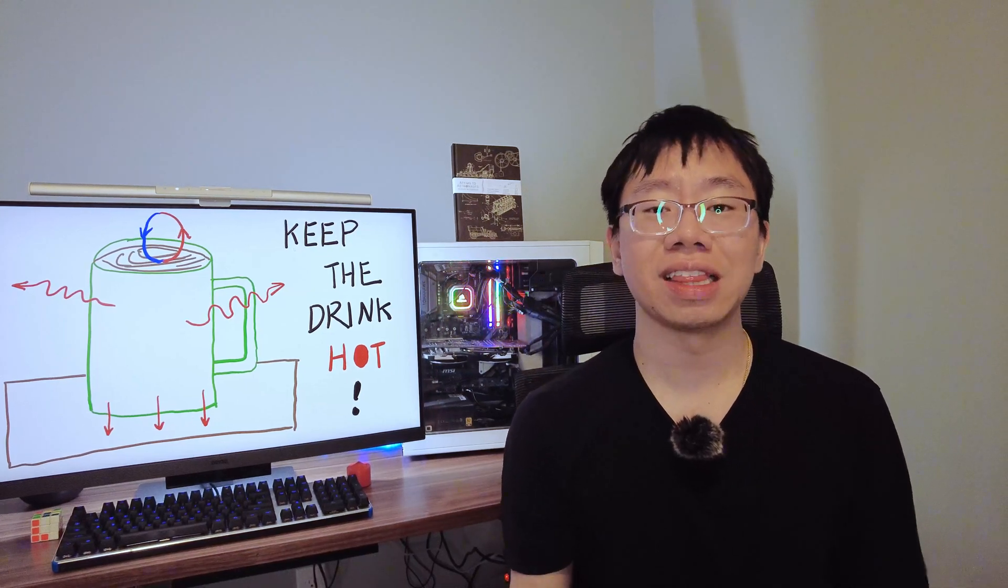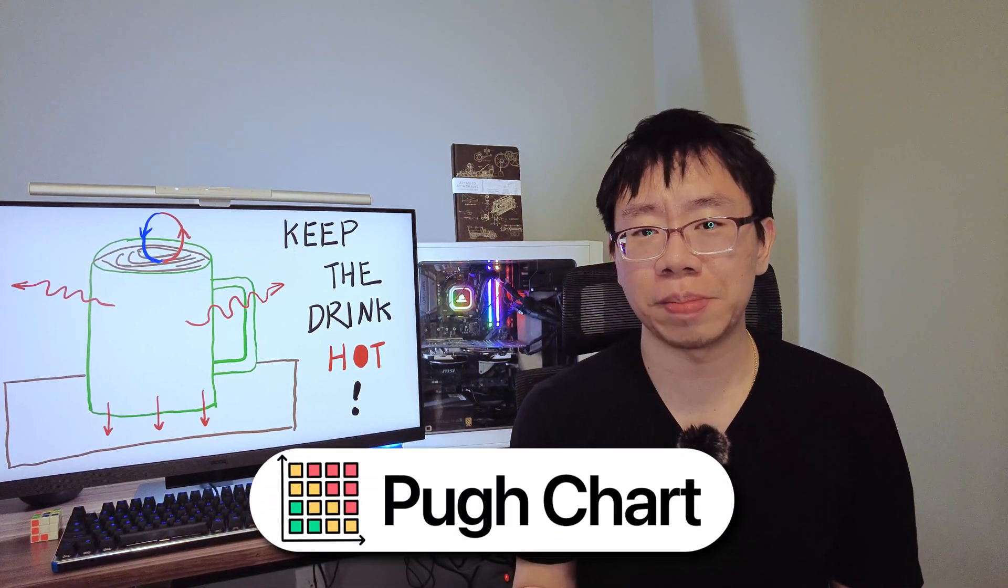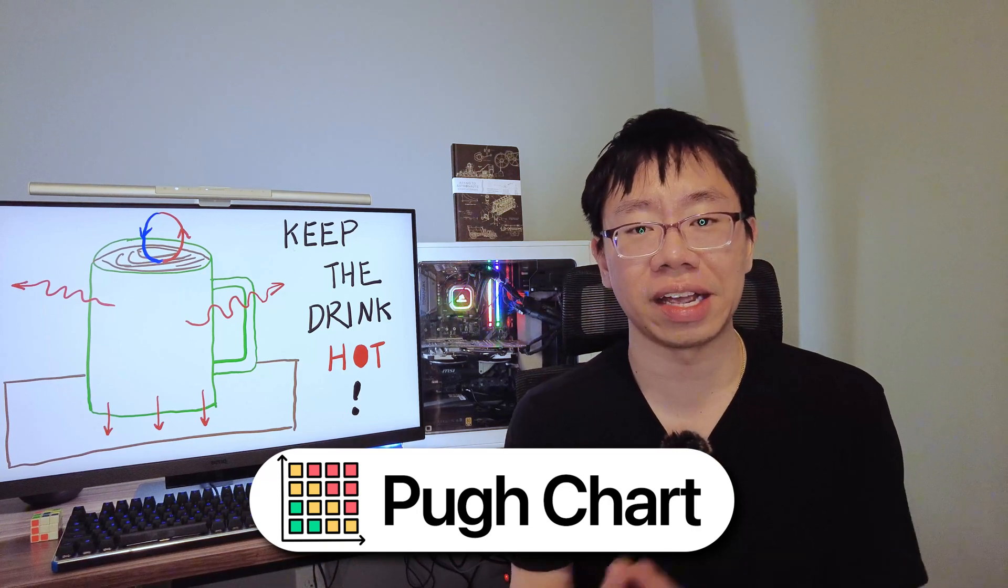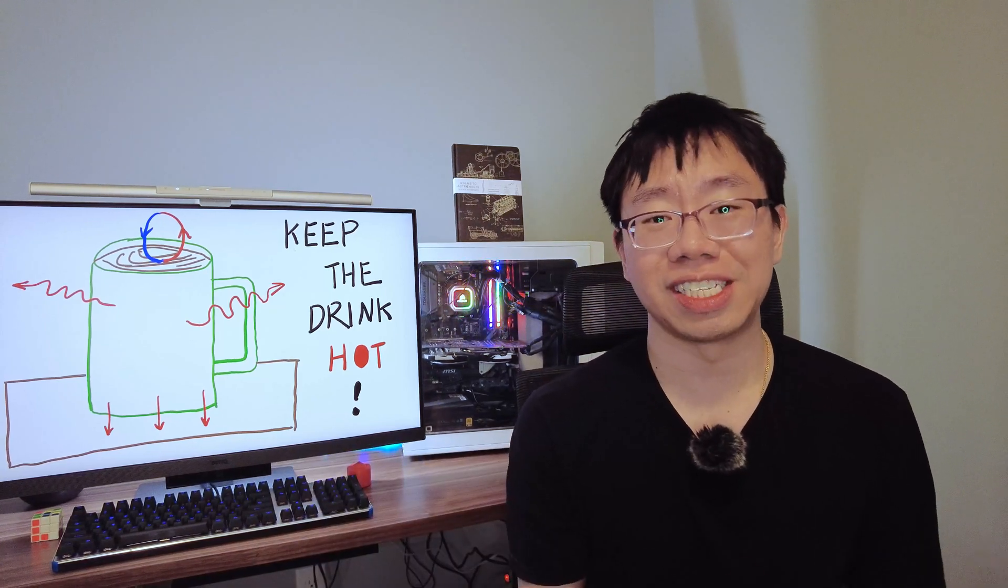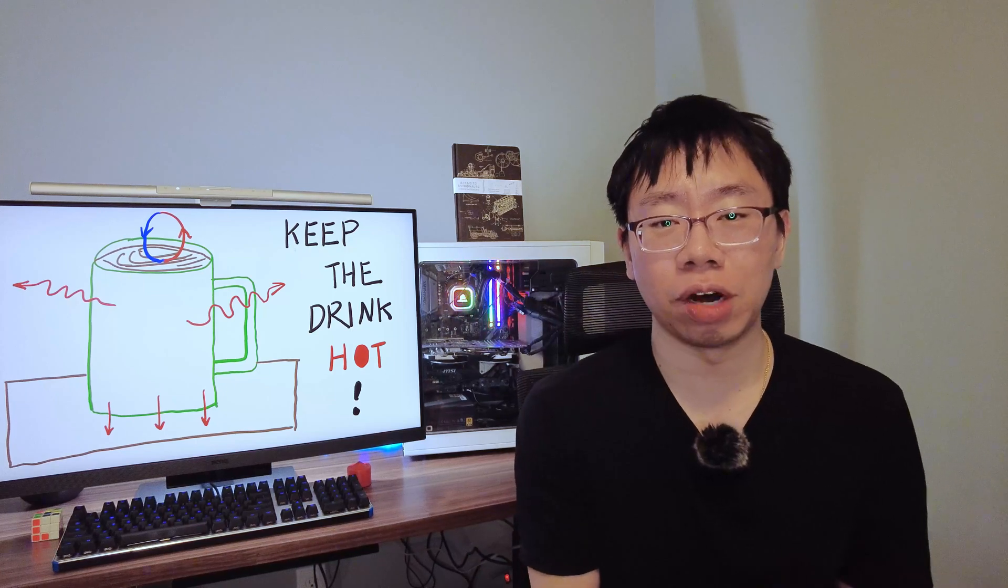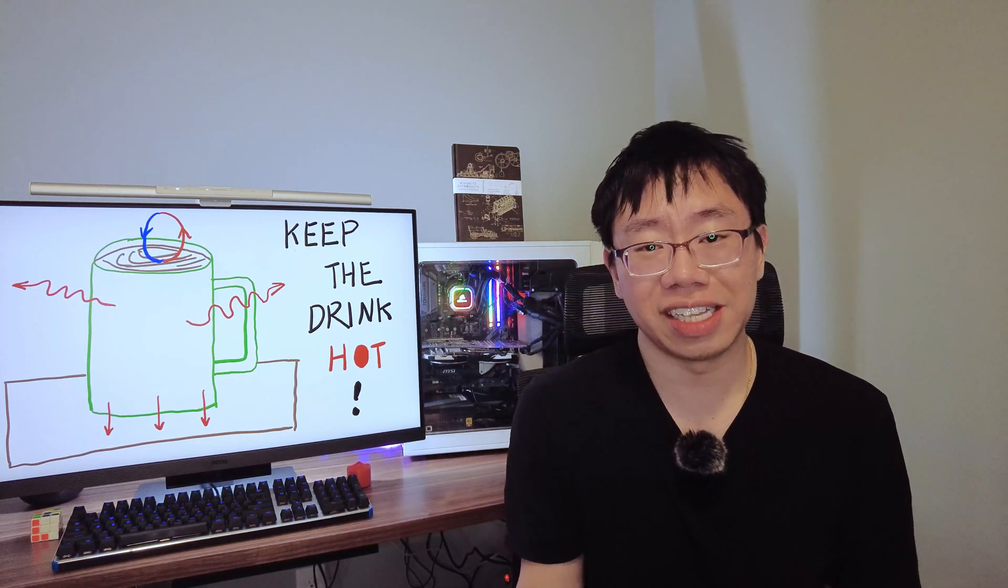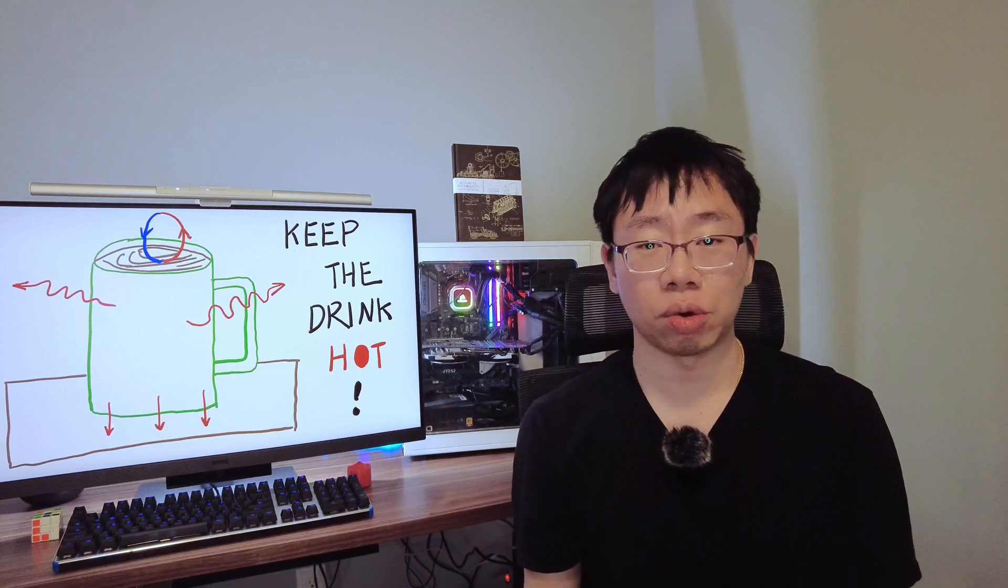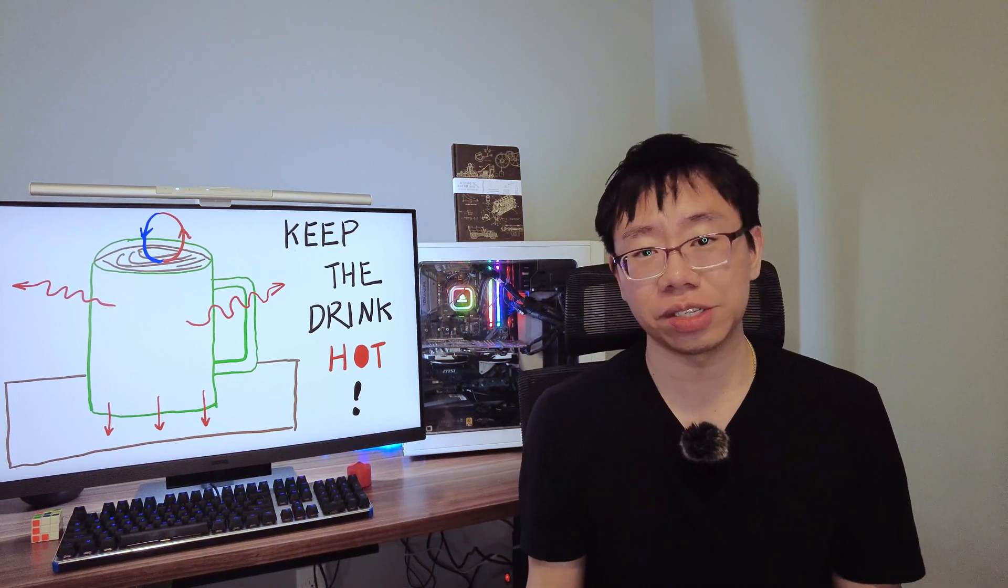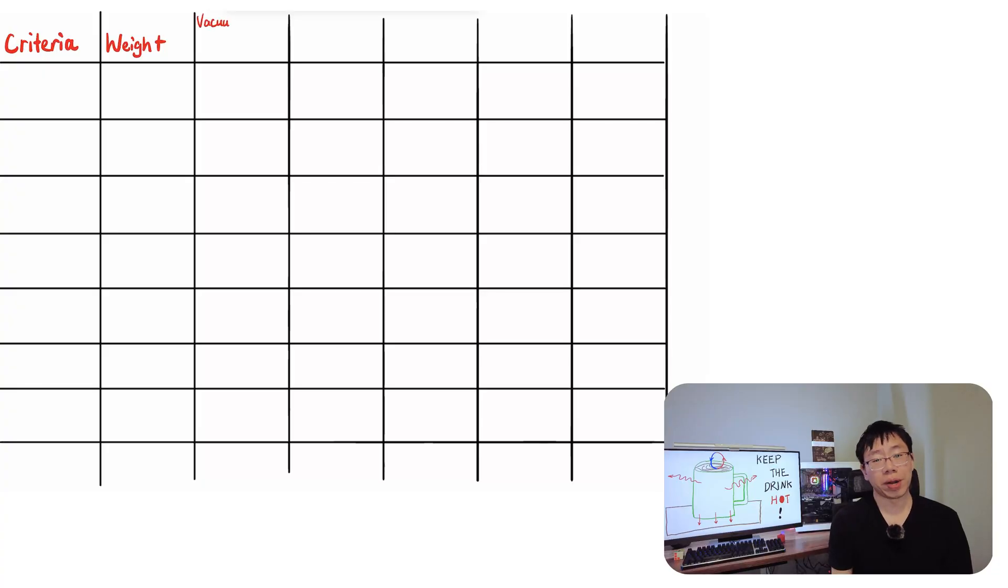Mechanical engineers often leverage Pugh charts to systematically compare different design options. So now we're deciding between a handful of design alternatives for this mug. The great thing about Pugh charts is that there's no limit. You can have two, six, or even a hundred design options to evaluate.